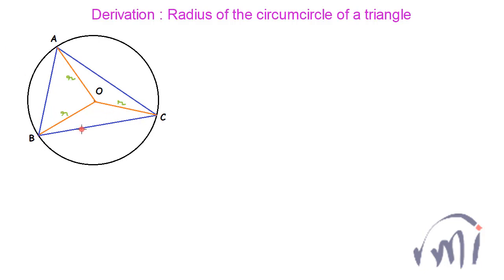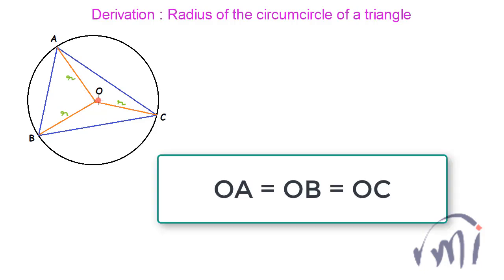And how do we draw the circumcircle of any triangle? We draw the perpendicular bisectors of at least two sides of the triangle and wherever they intersect that will be the center of the circumcircle. And if I measure the distance from that intersection point to any of the vertices, that all will be same and that is the radius of the circumcircle.